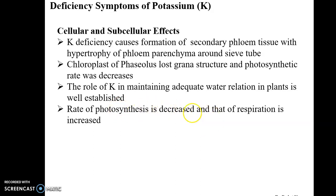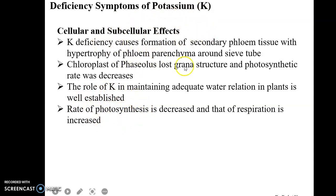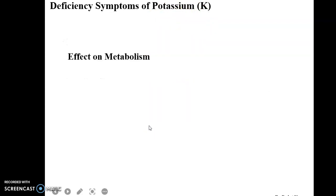The rate of photosynthesis is decreased and that of respiration is increased. As discussed earlier, the many enzymes involved in the process of photosynthesis are activated by potassium, so if there is a deficiency of potassium, then the rate of photosynthesis will be decreased.